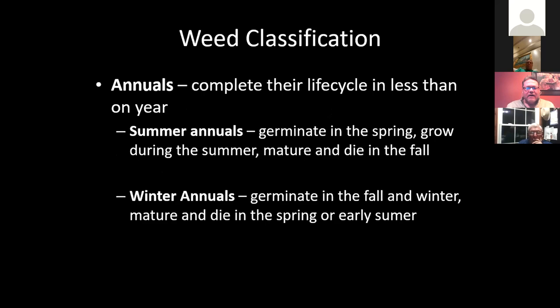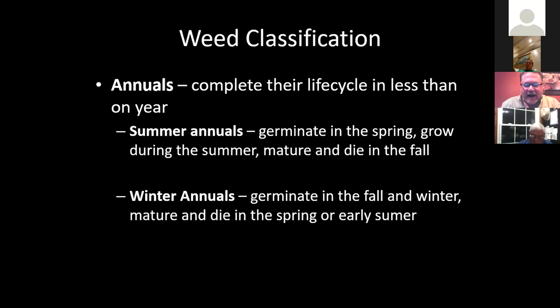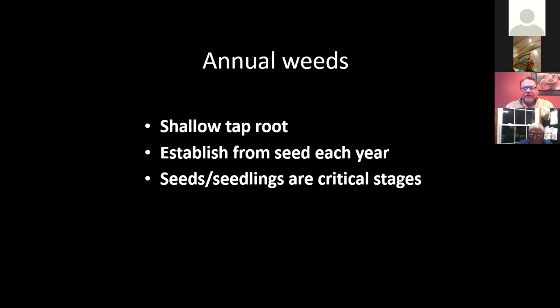Annuals complete their life cycle in less than a year. We have summer annuals and winter annuals. Summer annuals germinate in the spring when soil temperature is 65 degrees or above — that's when those summer annuals start to grow. Winter annuals grow when soil temperature drops below 65 in the fall and winter, then die out when soil temperatures warm up. Annual weeds have a shallow tap root; they establish from seed each year. Seeds and seedlings are the critical stages. If you can control that plant from making seeds, you can control that plant, and prevent seeds from germinating year after year.